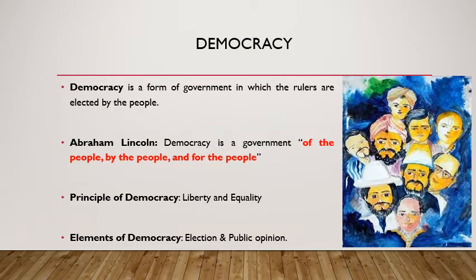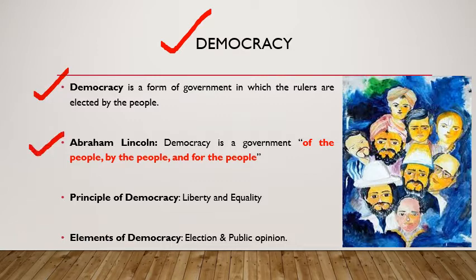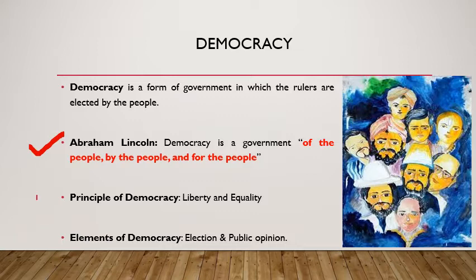From Class 6 onwards we have been reading about democracy. The general definition is: democracy is a form of government in which the rulers are elected by the people. According to Abraham Lincoln, democracy is a government of the people, by the people, and for the people. Democracy revolves around the people. It is based on two principles: liberty and equality. Two important elements of democracy are election and public opinion.